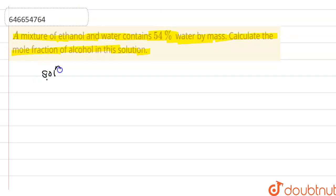So how to solve mole fraction? As you know, we have to require number of moles of each of the components. So according to 54%, 100 gram solution contains 54 grams of water and rest 46 grams of ethanol, correct.